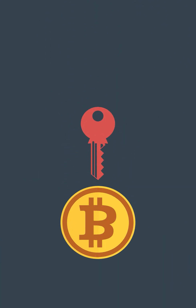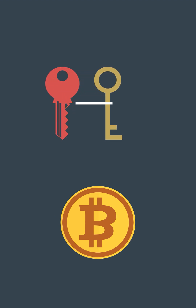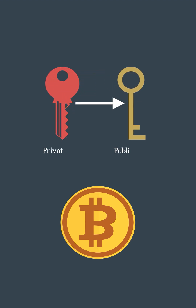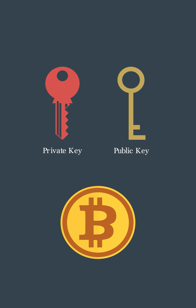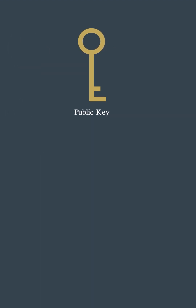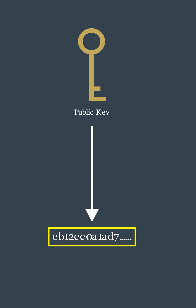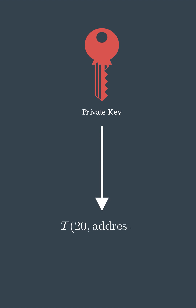In cryptocurrencies, there are two sets of keys that govern transactions: the private key and the public key. The public key can be derived using the private key, but vice versa is not true. The private key must remain private, whereas the public key can be made public. The public key is then used to derive the address, which you can think of as a bank account number where anyone can send money. The private key is used as a password that proves ownership of the funds, ensuring that the funds being transferred indeed belong to you.